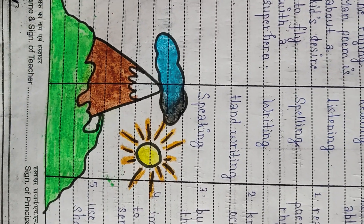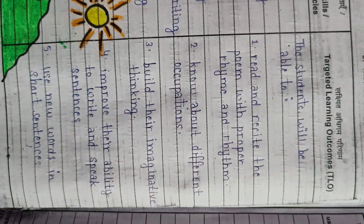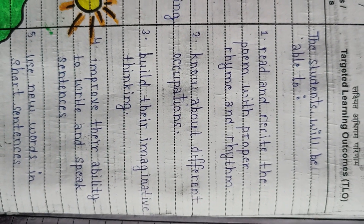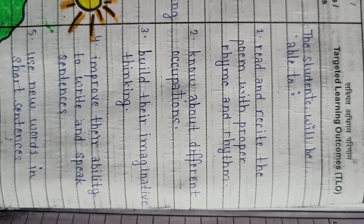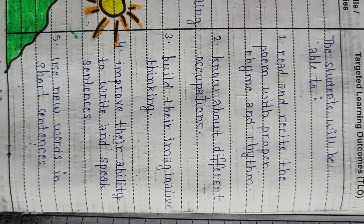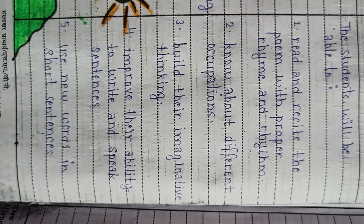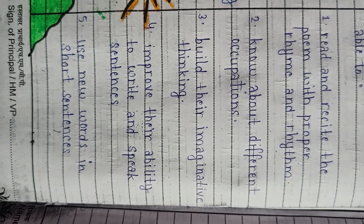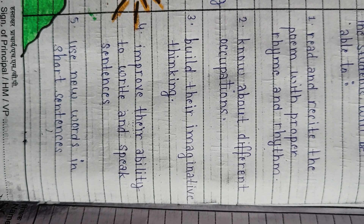Here is the picture that I have drawn. Now let us see the targeted learning outcomes. The students will be able to read and recite the poem with proper rhyme and rhythm, know about different occupations, build their imaginative thinking, improve their ability to write and speak sentences, and use new words in short sentences.